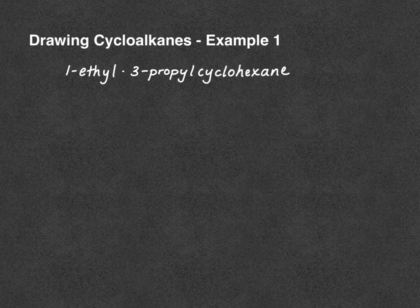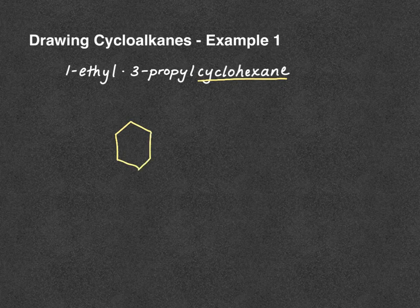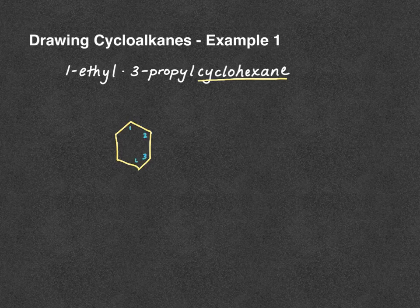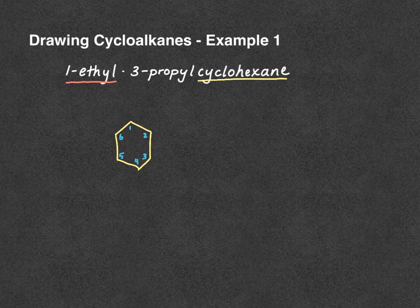Next up we're going to look at drawing a cycloalkane. We'll break this name down starting with our parent chain, cyclohexane — that's a six-membered ring, so we draw a hexagon. It doesn't matter where you decide carbon one is; I'll assign number one to the top of the ring and rotate clockwise. Once I've numbered my carbons, I put on my branches: ethyl goes at carbon one, which is a two-carbon branch, and propyl goes at carbon three, which is a three-carbon branch.